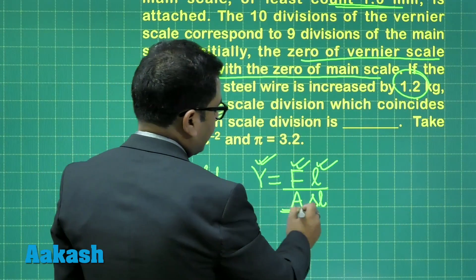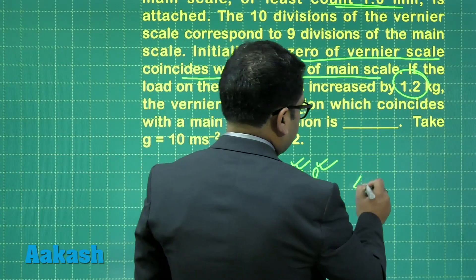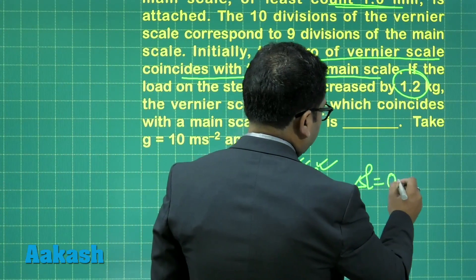The cross-sectional area can be calculated by pi D squared by 4. And when this is done, you'll get delta L as 0.3 millimeter.